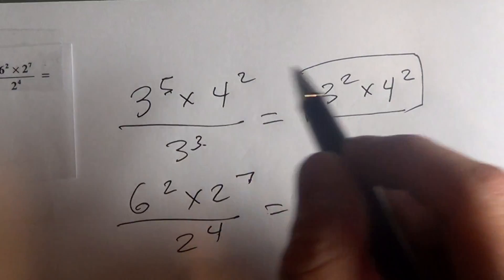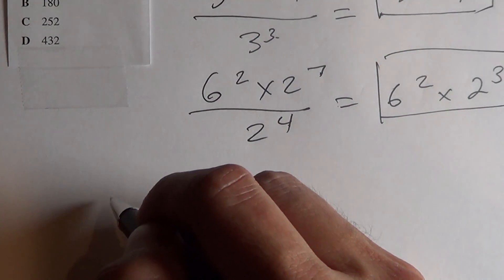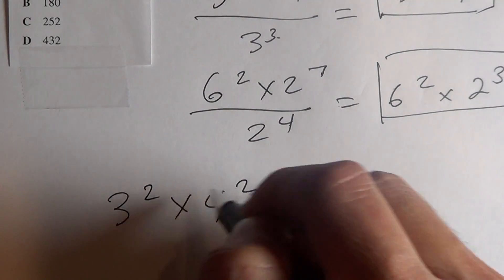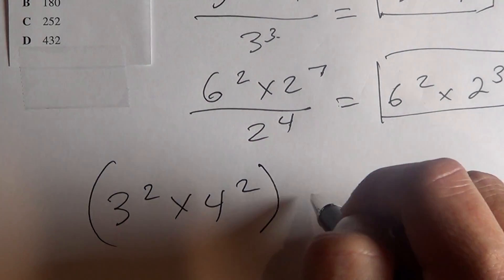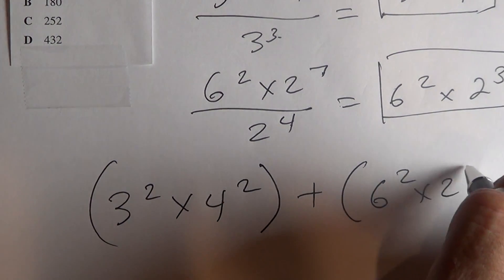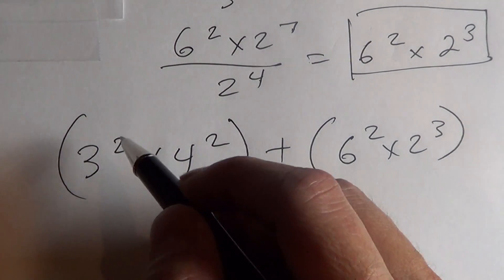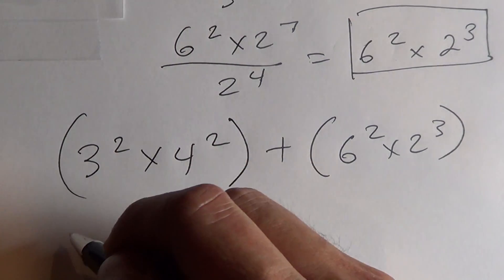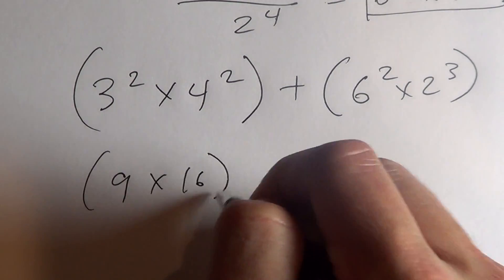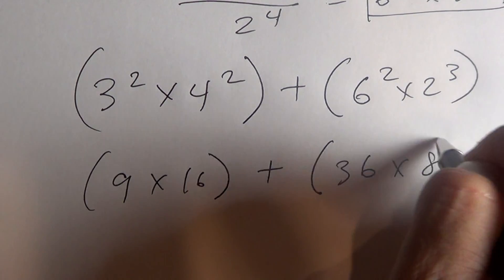So now we'll take these two and we'll add them together. So we have 3 to the second. This is a lot easier, huh? So let's just continue with the problem. So this is 9 times 16, 36 times 8.